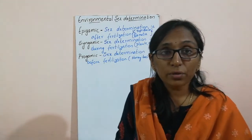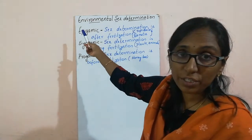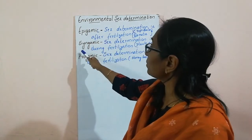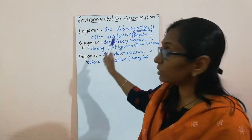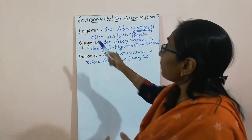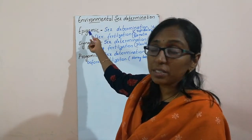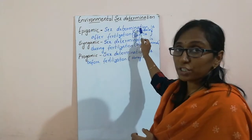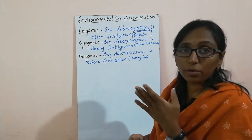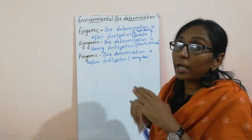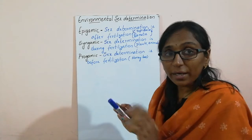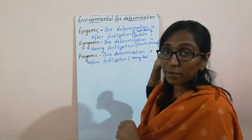Before going into that, I would like to tell you a few definitions. There is epigamic sex determination, syngamic sex determination, as well as pro-gamic type of sex determination. Epigamic type of sex determination means if the sex determination is after the fertilization — that is, after the process of fertilization is completed, the sex of an offspring is determined.